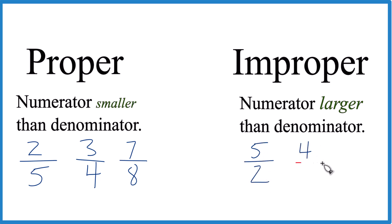or 4 thirds, or 8 sevenths. All of these are improper because this numerator, that's larger than the denominator.